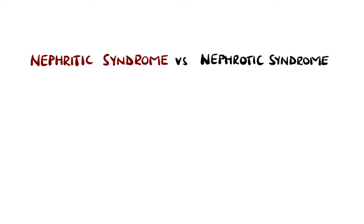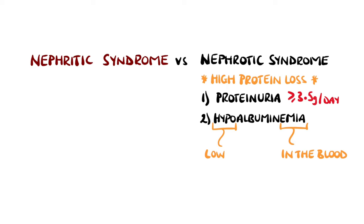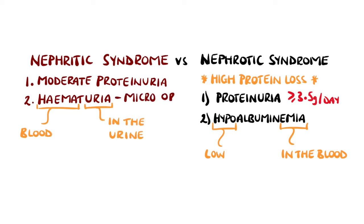It is easily confused with nephrotic syndrome, which is a collection of signs and symptoms resulting from a high amount of protein being lost through the kidneys in the urine, leading to hypoalbuminemia — meaning low levels of albumin in the blood. There is some overlap, but nephritic syndrome differs in that the degree of proteinuria is lower, and there is the presence of hematuria, meaning blood in the urine, which could be microscopic or macroscopic.